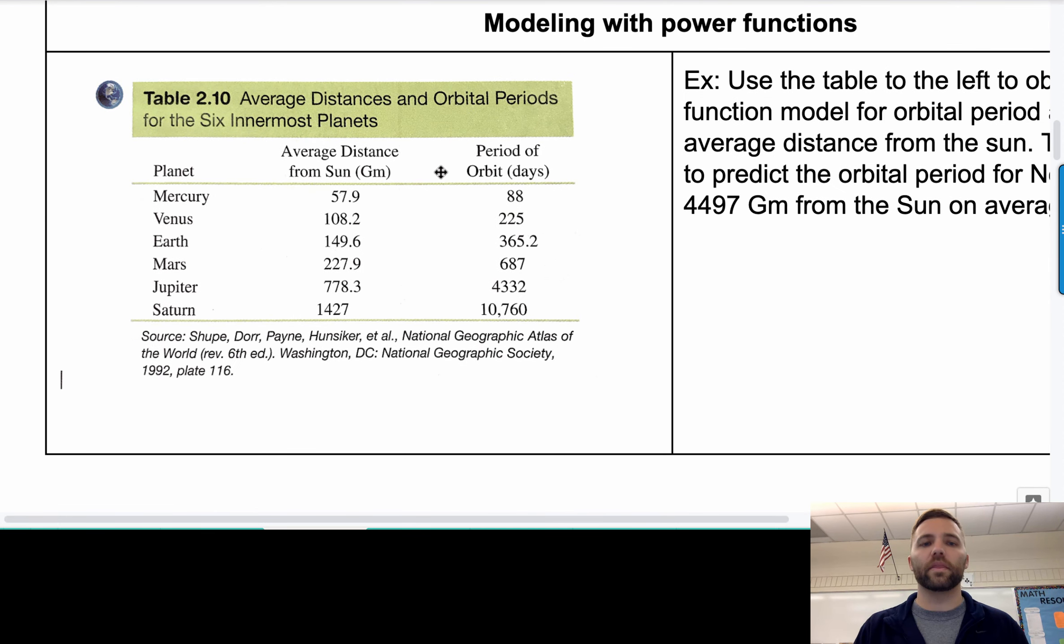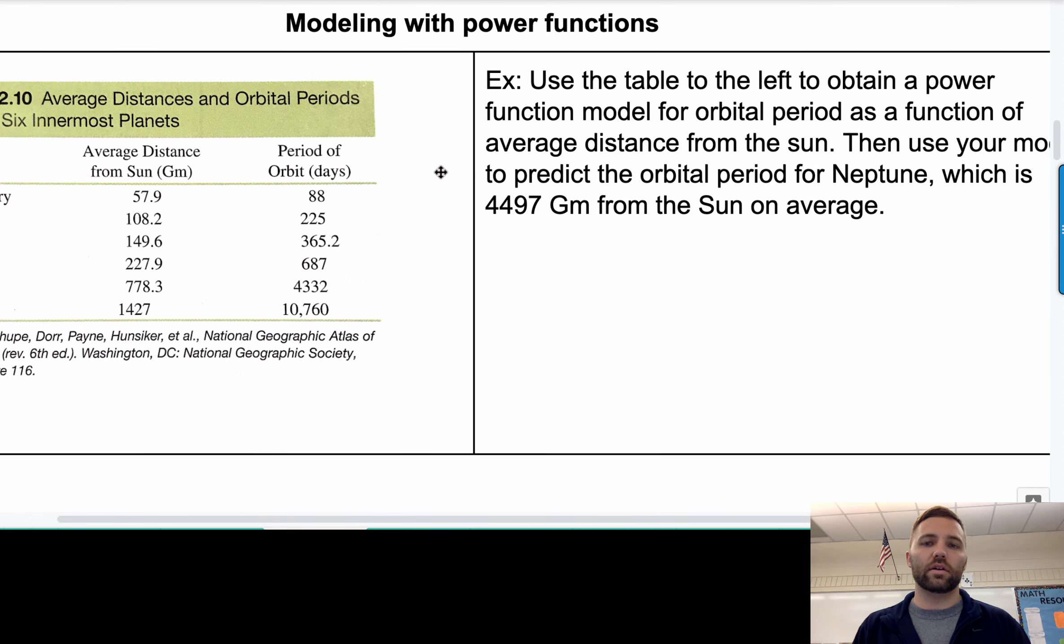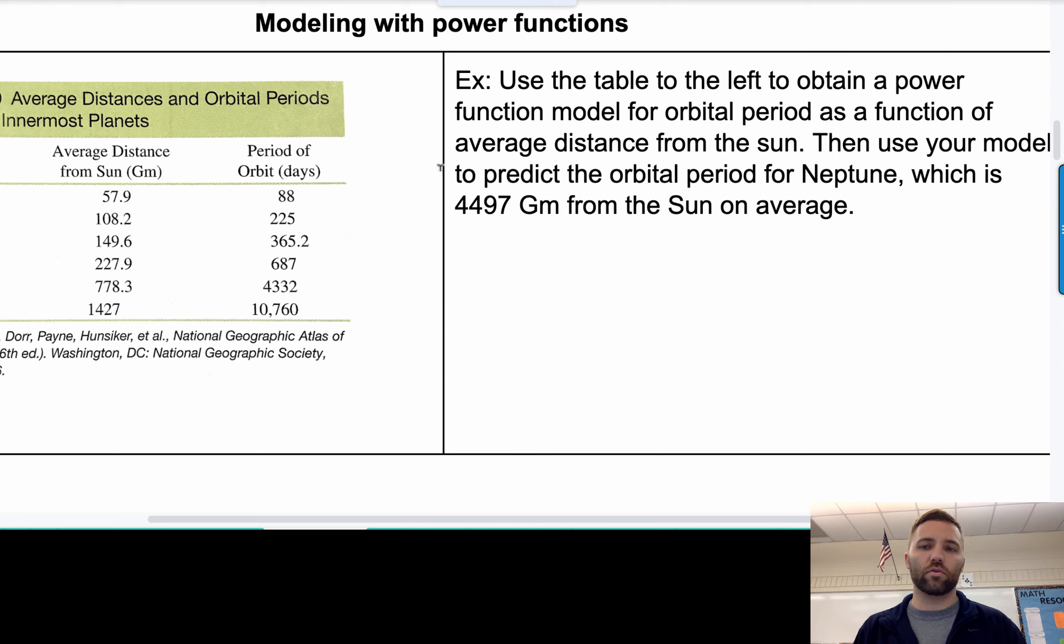Last problem here. Over here on the left, I have a bunch of data. I have data on the planets that gives us average distance from the sun and the period of orbit for each of the first six planets. Okay. And then what we want to do is take this data and use it to obtain a power function model for orbital period as a function of average distance from the sun. And then we'll make a prediction about Neptune. So what you're going to do is put the average distance from the sun in L1 in a list in your calculator. You're going to put the period of orbit in L2. And you're going to run a power regression.